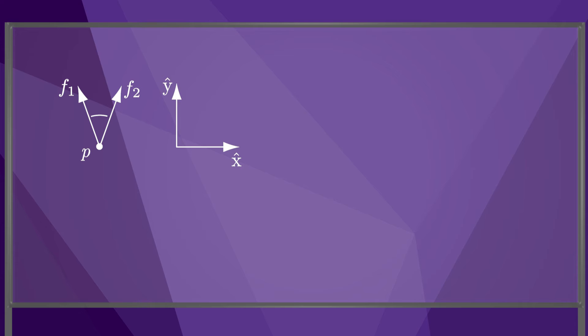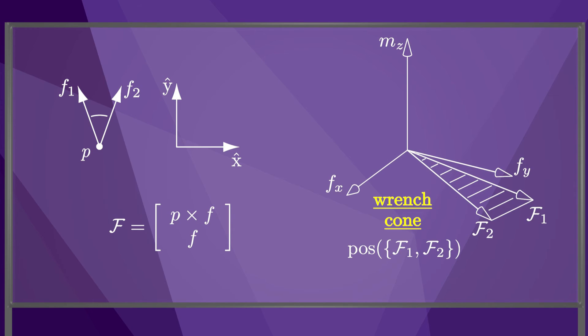For the coordinate frame shown here in a planar friction cone, which is the positive span of F1 and F2, the wrench cone includes the moments P cross F, where P is the contact point in the coordinate frame.